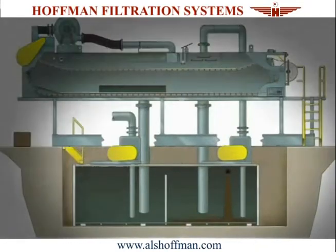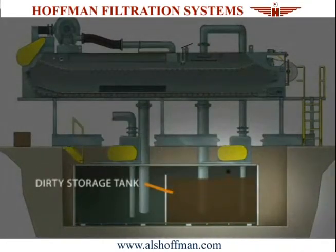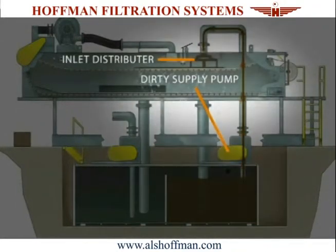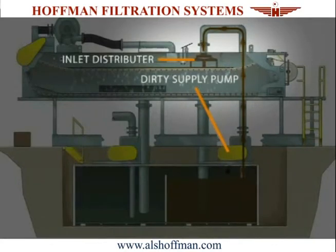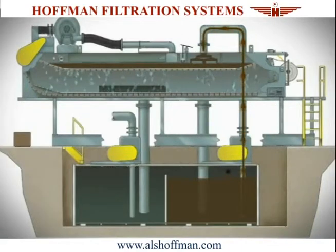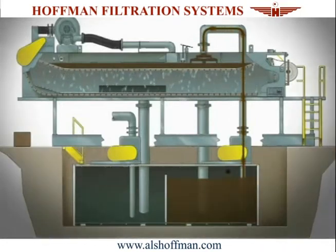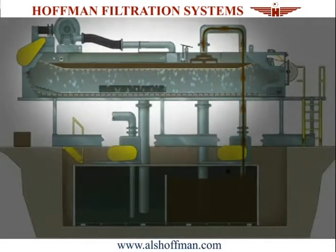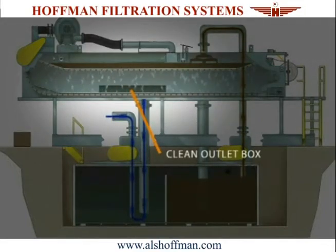In a typical filtration process, a dirty storage tank is used to accumulate dirty liquid from the process. A dirty supply pump feeds the inlet distributor of the filter, which removes velocity from the liquid and gently dispenses it onto the filter media. In smaller applications, the filter can be fed directly from the process and clean liquid fed directly back to the process. The dirty liquid is filtered through the media and rains down into the vacuum chamber, exiting the filter through the clean outlet box.